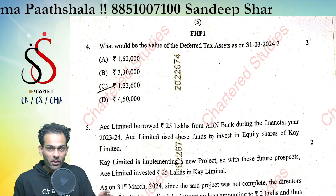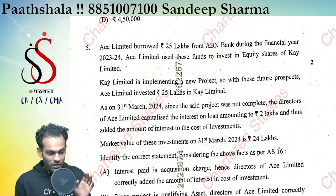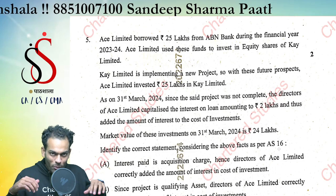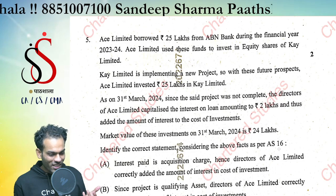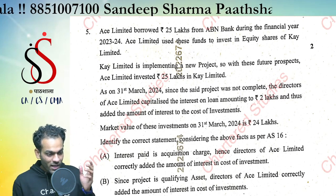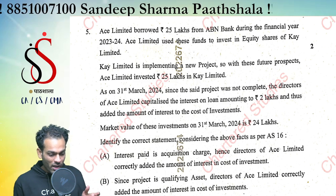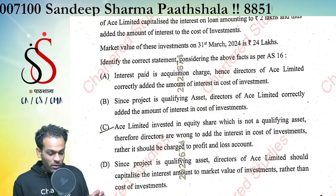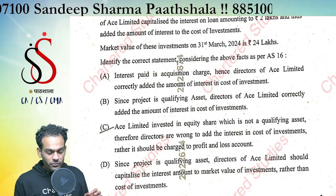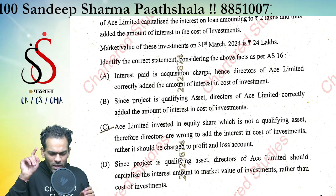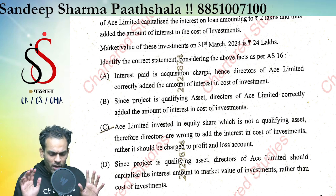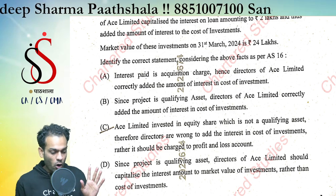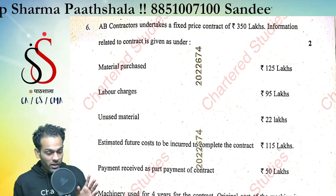If you have any queries, just tell me in the comment section. Also subscribe the channel so that I can make more videos in English. The next question is: Ace Limited borrows 25 lakh — there is quite a bit of detail there. The correct answer would be C. Ace Limited has invested in equity shares, which is not a qualifying asset. Therefore the directors are wrong. The correct answer is C.